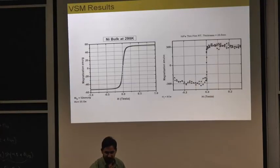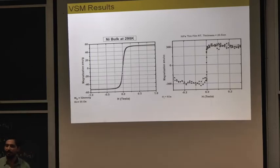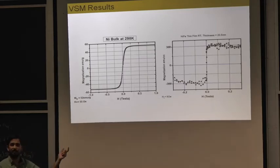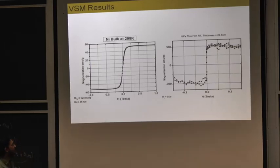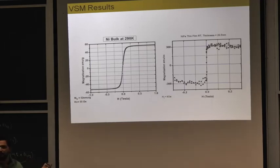Here are results obtained from the VSM present in the central lab. There is a graph of nickel bulk, which gives a saturation magnetization of 52 emu per gram — in good agreement with experiment. On the right side is a permalloy thin film. Permalloy is a nickel-iron alloy; the thickness of the thin film is approximately 21 nanometers, and we get a very smooth ferromagnetic curve — soft magnet behavior. The units are emu per gram on one side and emu per cc on the other: emu per gram is magnetization per unit mass, while for the thin film it is magnetization per unit volume.